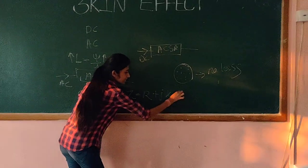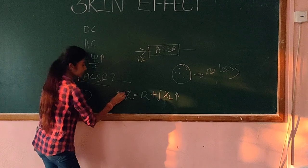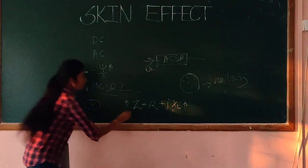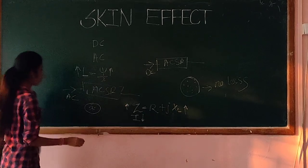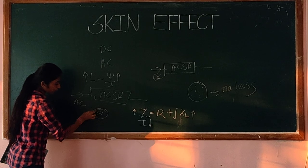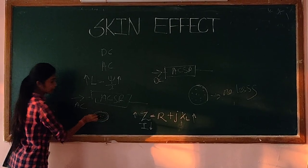XL increases. And because XL increases, impedance increases. So as impedance increases, current decreases. So current starts flowing from the outer part of the cable.